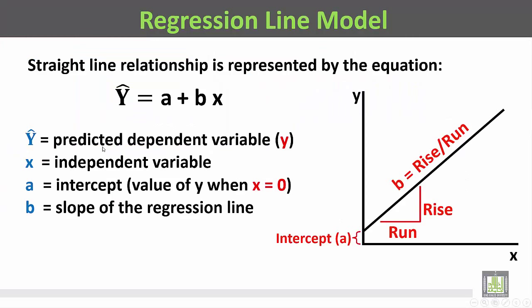Y-hat is the predicted dependent variable. X is the independent variable. A is the intercept — the value of y when x is equal to zero. B is the slope of the regression line. Y-hat هي قيمة المتنبأ بها للمتغير التابع. X هي قيمة المتغير المستقل. A هي قيمة المتغير التابع عندما تكون قيمة المتغير المستقل تساوي صفراً. B أو الميل هو الميل الخاص بخط الانحدار.